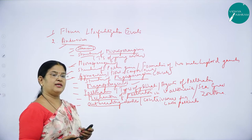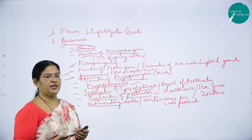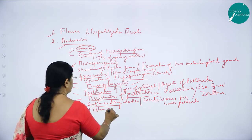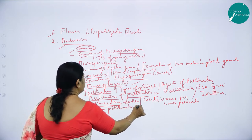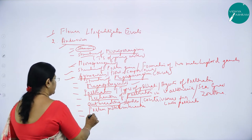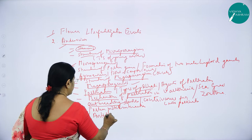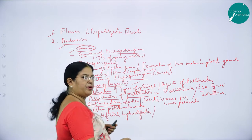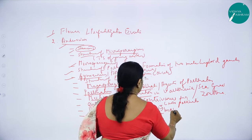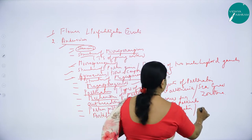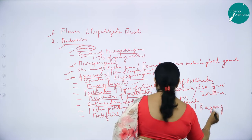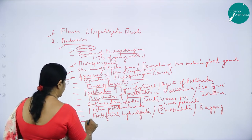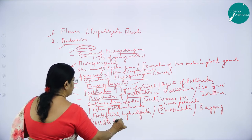Plants have strategies and devices to avoid self-pollination and encourage cross-pollination — these are outbreeding devices or contrivances for cross-pollination. Then we studied pollen-pistil interaction and its advantages. We also studied artificial hybridization, which is achieved by two important techniques: emasculation and bagging. Then we studied the very important event called double fertilization.